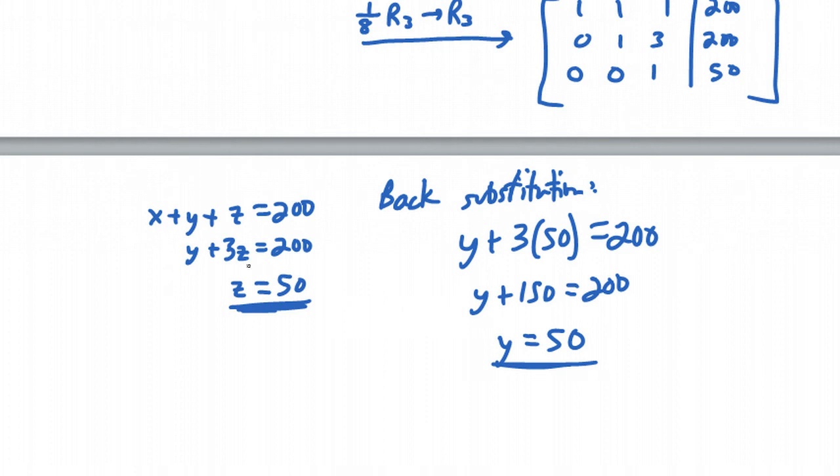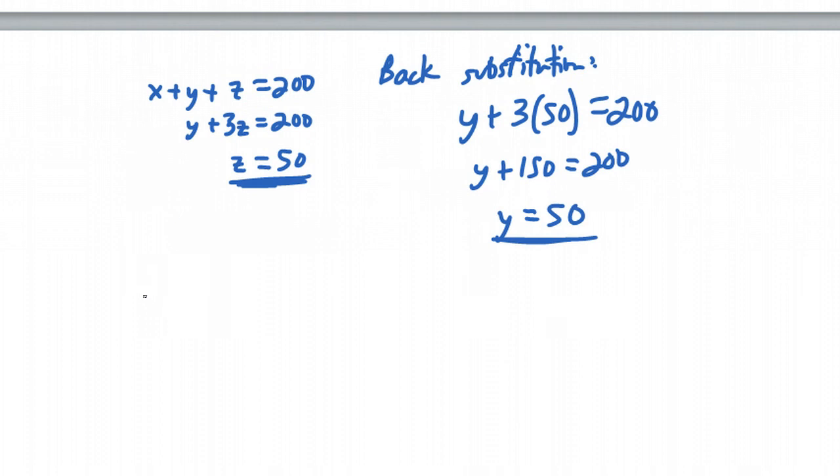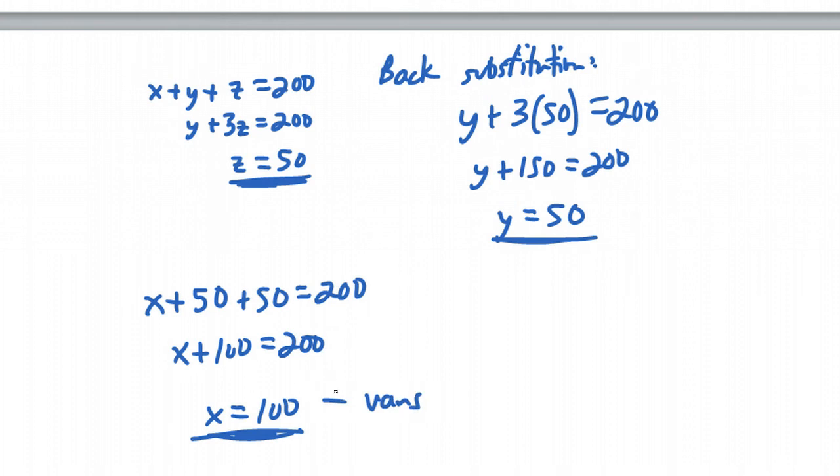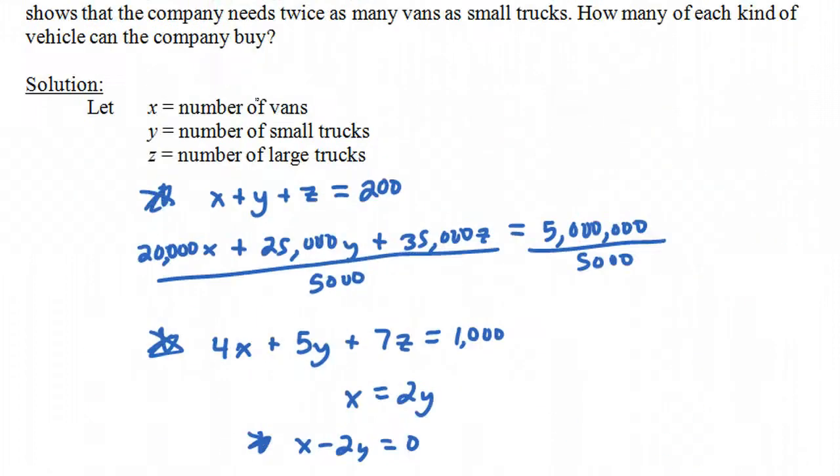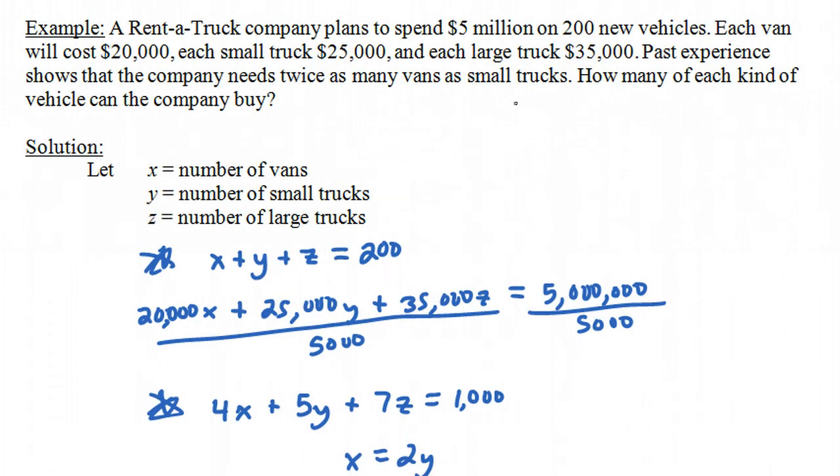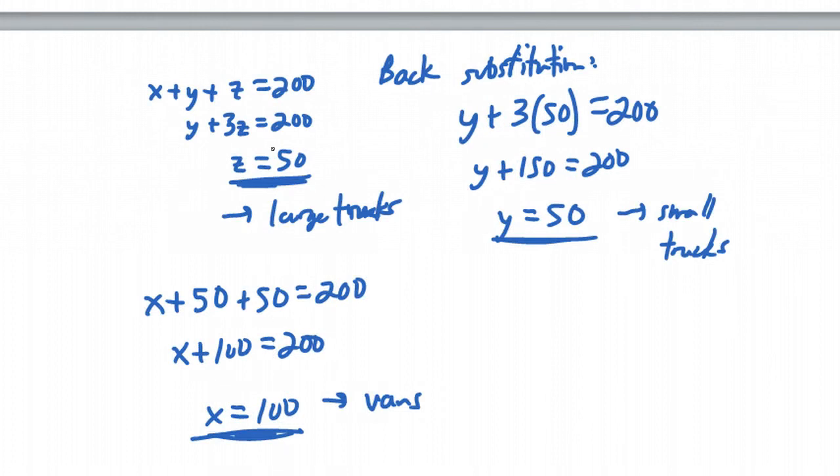Now the question is what's x? Go back to the first equation. We have x plus y plus z equals 200. But y is 50 and z is 50, and so that will equal 200. So what we have is x plus 100 is equal to 200. So x is equal to 100. What does this mean? x was the number of vans, y was the number of small trucks, and z is the number of large trucks. You can check all the pieces of information are satisfied. There's a total of 200. If you add up the amount that's spent on each of these, it's going to end up totaling up to be 5 million. And also they wanted twice as many vans as small trucks, and we have 100 vans and 50 small trucks. So that worked out perfectly.